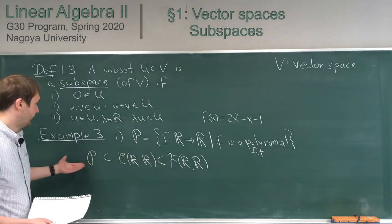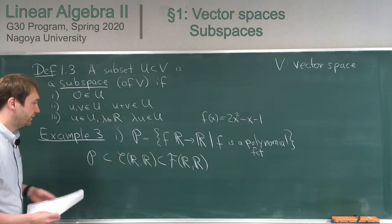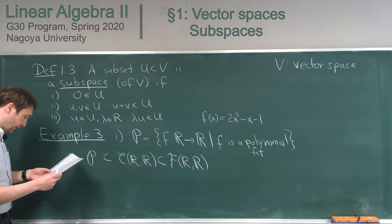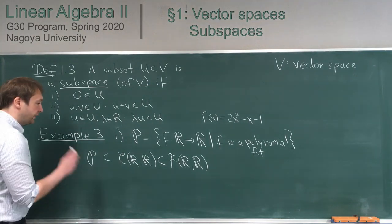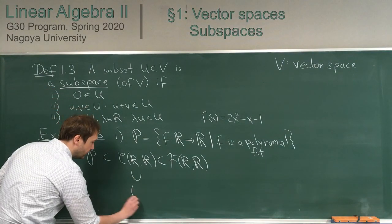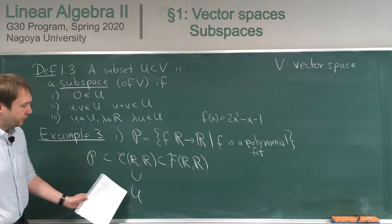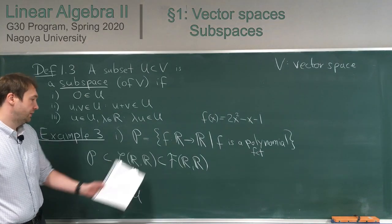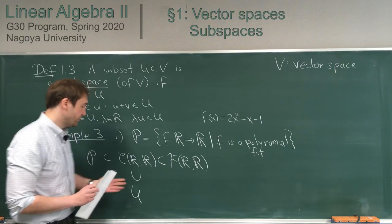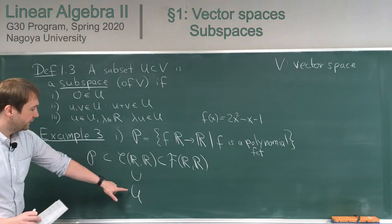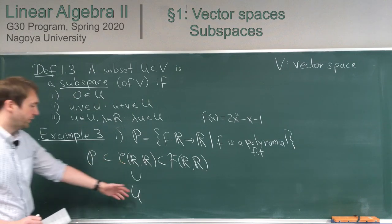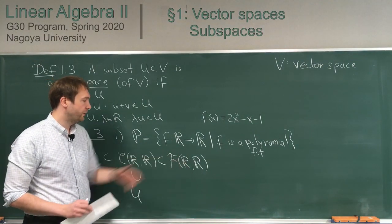So we have various examples of subspaces here. Also in example number 1, we had the space U of functions such that the second derivative equals the function itself — this is an example of a subspace of continuous functions, or also of all functions.